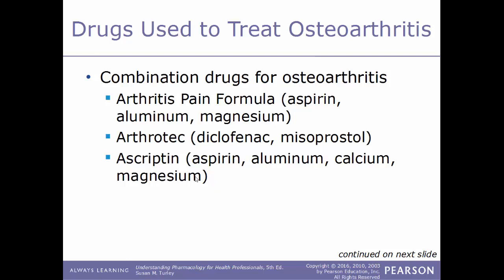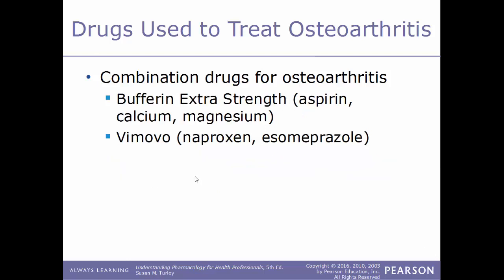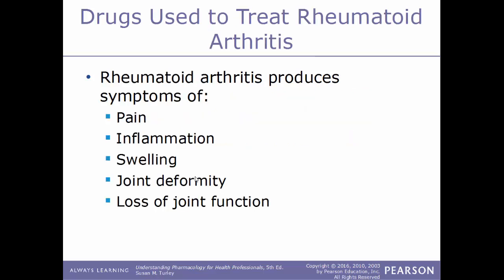Combination drugs are commonly used to treat osteoarthritis. Examples include: Arthritis Pain Formula — a combination of aspirin, aluminum, and magnesium; Arthrotec — a combination of diclofenac and misoprostol; Ascriptin — a combination of aspirin, aluminum, calcium, and magnesium buffering; Extra Strength Bufferin — a combination of aspirin, calcium, and magnesium; and Vimovo — a combination of naproxen and esomeprazole.